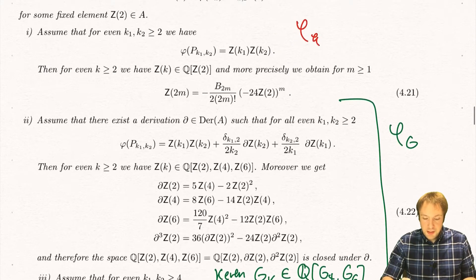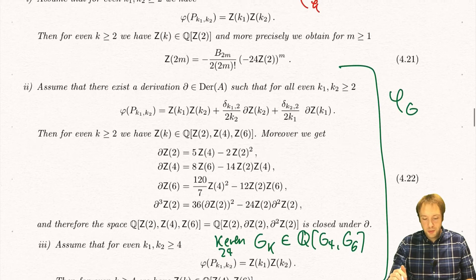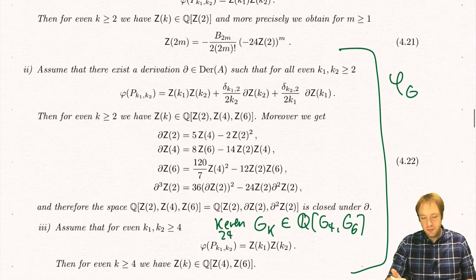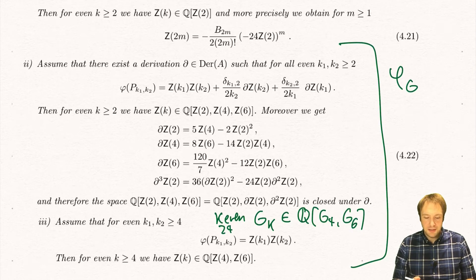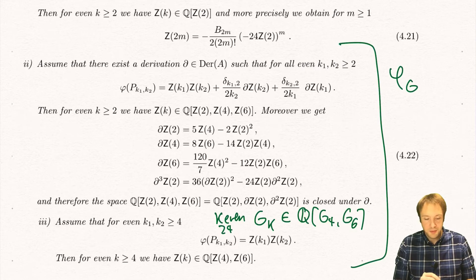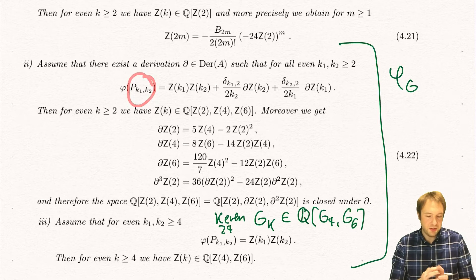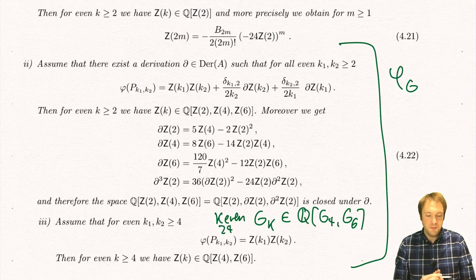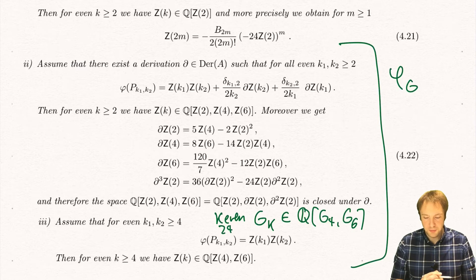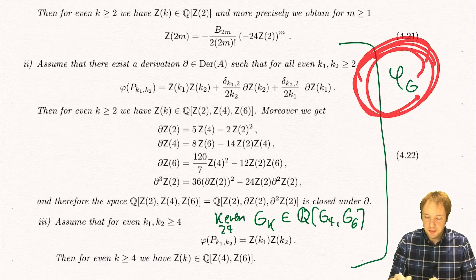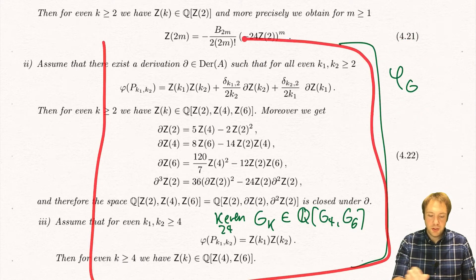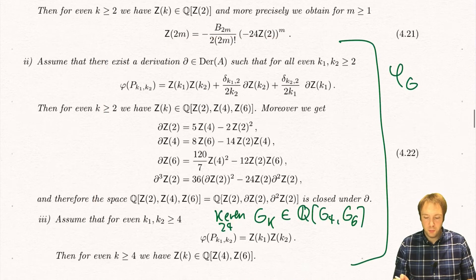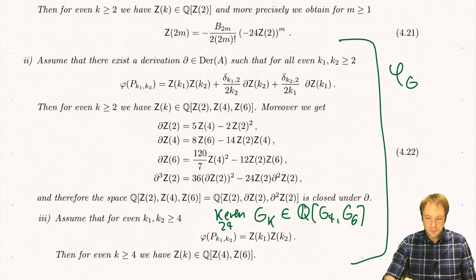Today we want to introduce the period polynomials, and then show — we will prove it next time but state the theorem today — that a certain subspace of this formal double zeta space, which is basically generated by p even-even, is isomorphic to the space of modular forms. The isomorphism will be given by this map here, and we can already see that we can prove a lot of relations which are true for modular forms by the theorem we proved last time.